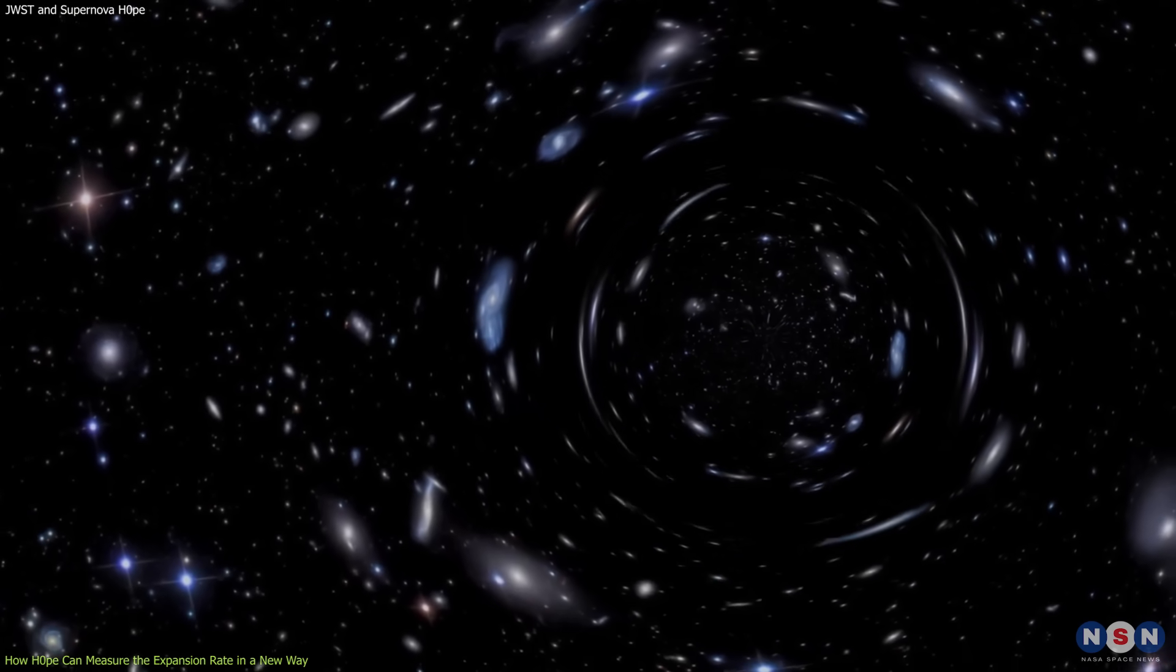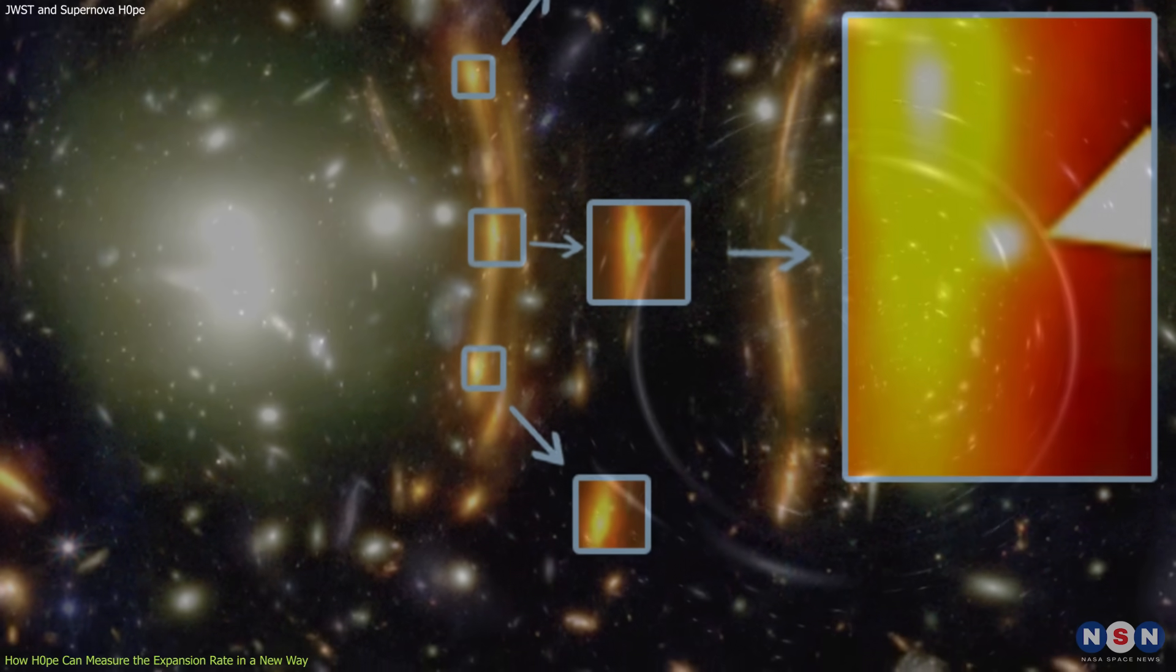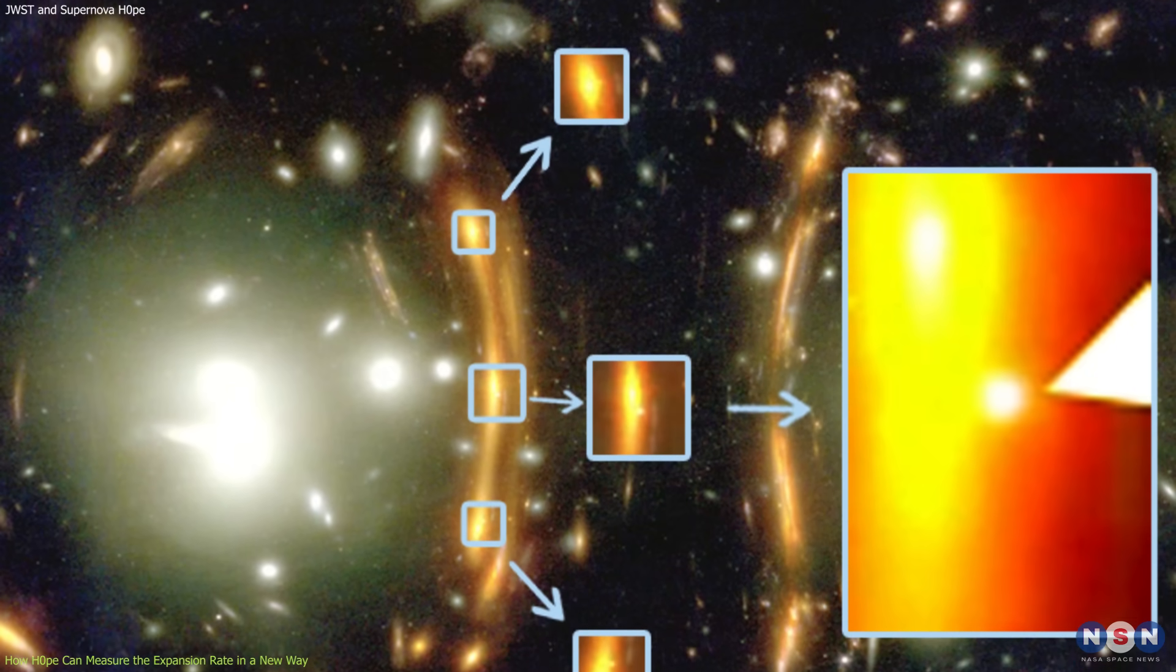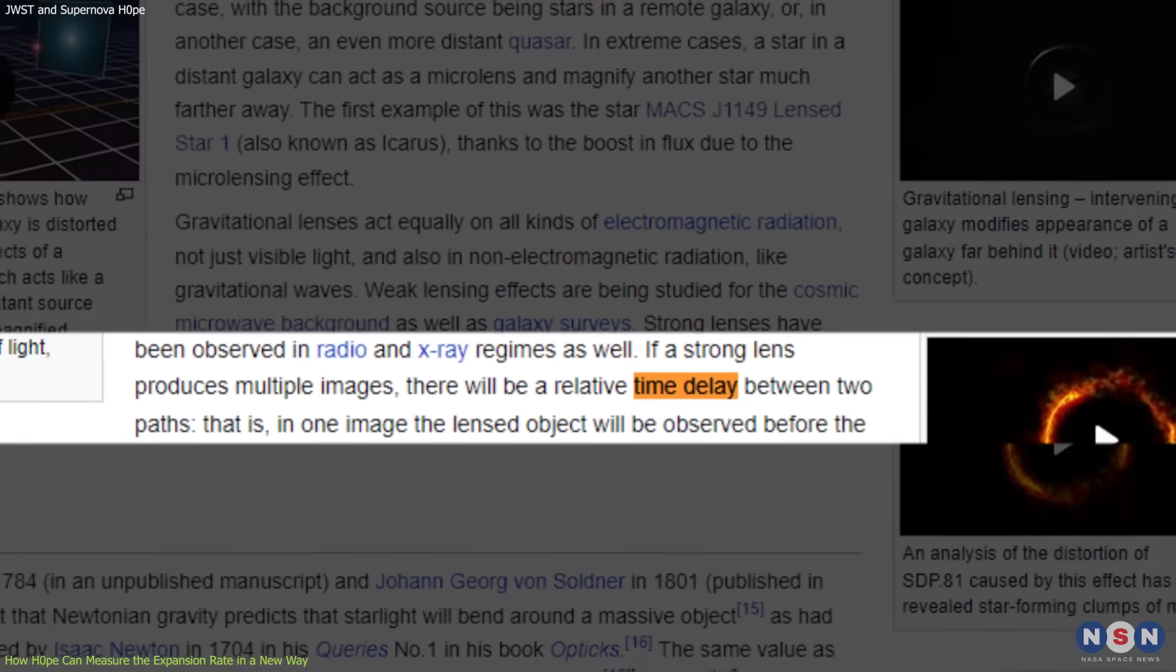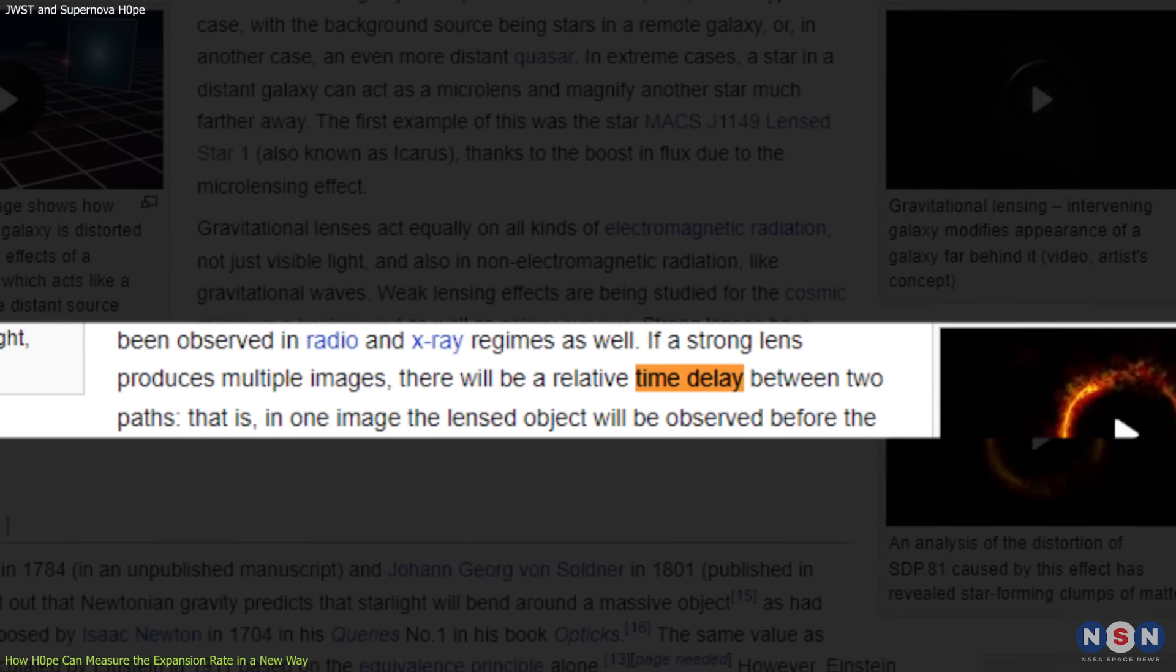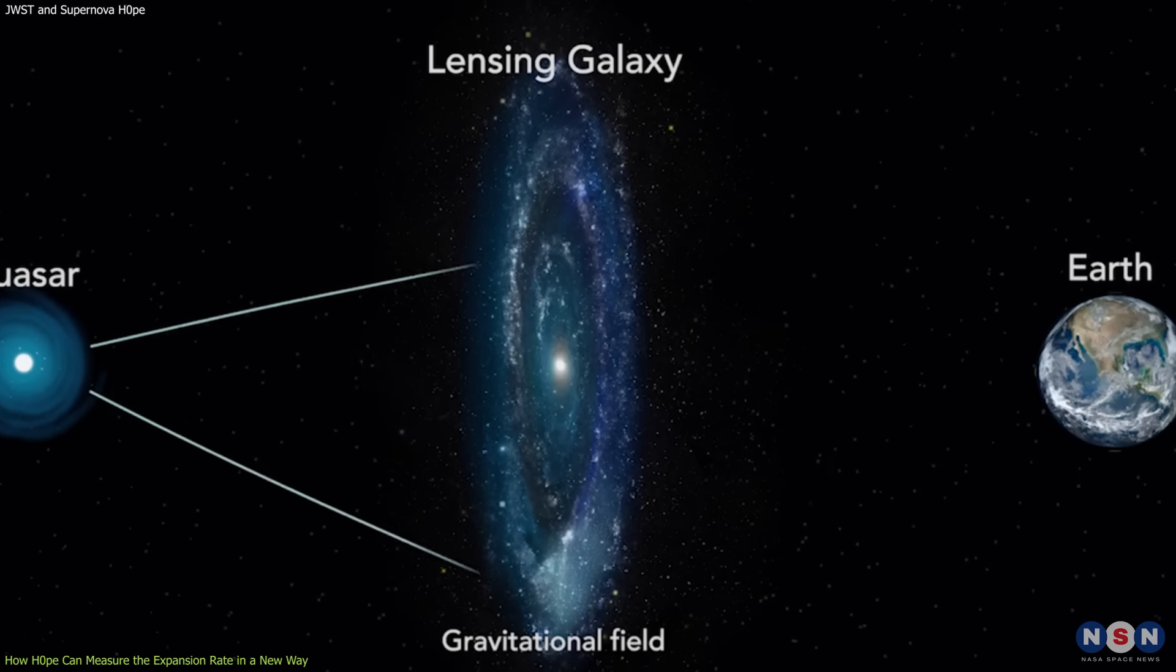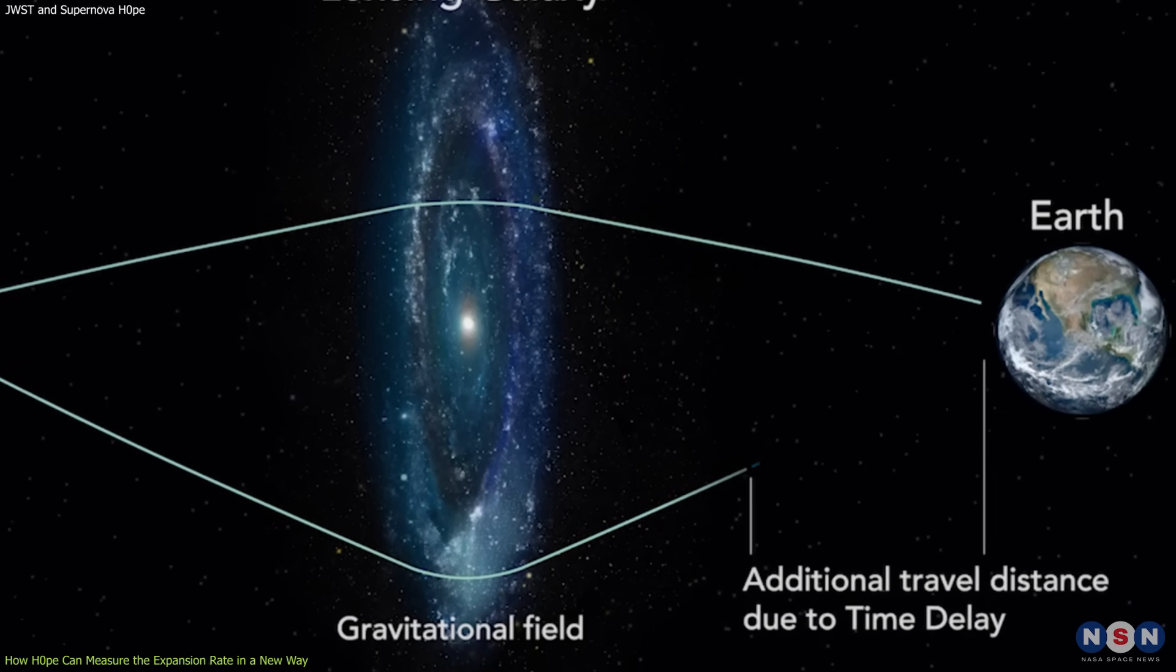Remember that gravitational lensing creates multiple images of the same source at different positions and magnifications. But it also creates another effect. Time delay. Time delay is the difference in arrival time between different images of the same source due to their different paths through spacetime. The longer the path, the longer it takes for the light to reach us.